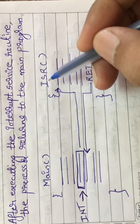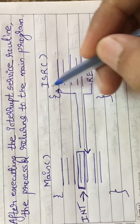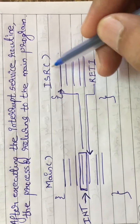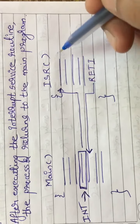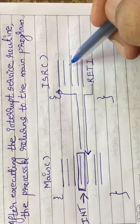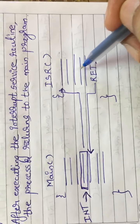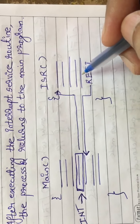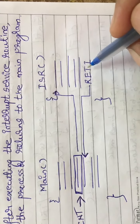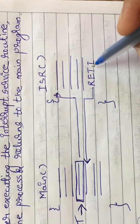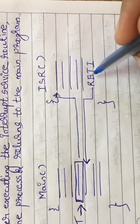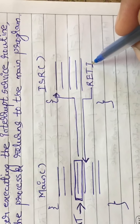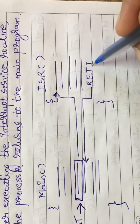When peripheral devices activate an interrupt signal, the processor jumps or branches to a program called the interrupt service routine. Whenever the peripheral device activates an interrupt signal in between execution, the processor will jump to the interrupt service routine. This program is written by the user for performing tasks that the interrupt device wants the processor to execute. After executing the interrupt service routine, the processor returns to the main program.